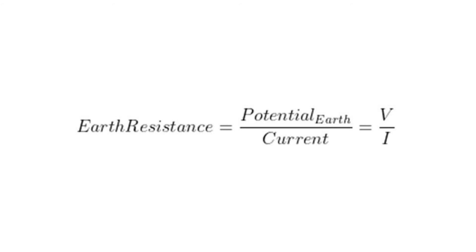And the formula is: Earth resistance equals the potential to Earth over current, or simply V over I, where potential to Earth is the measured voltage between the voltage spike.